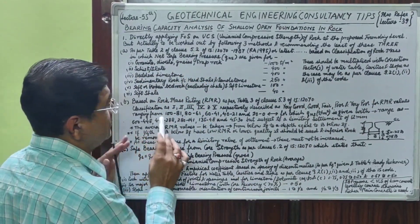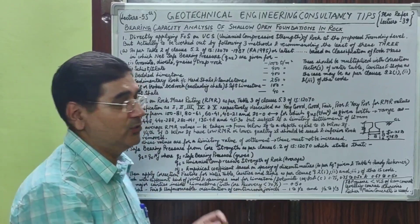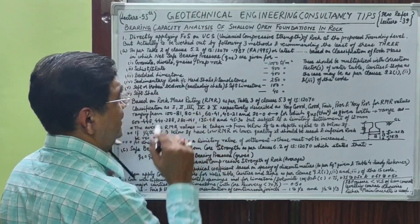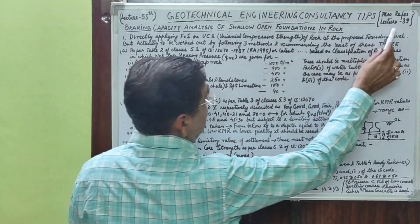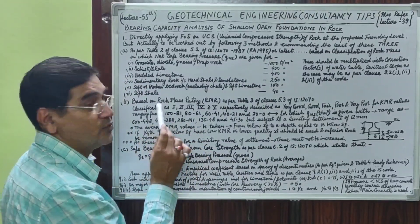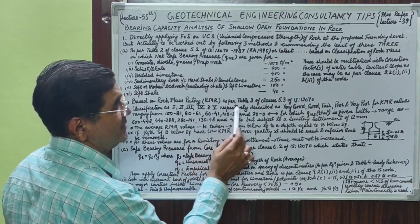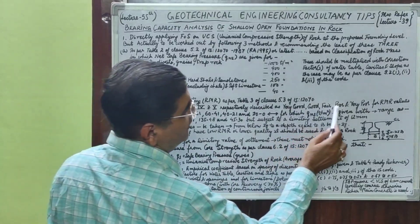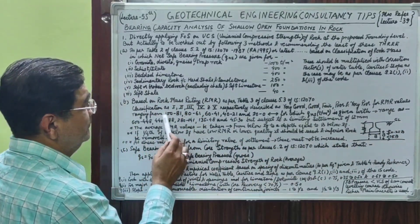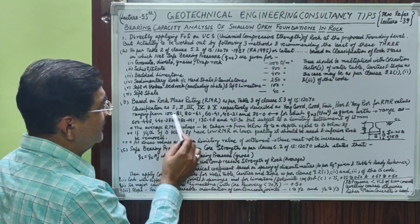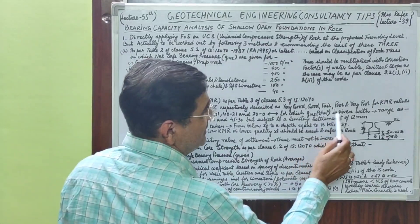The second method is based on Rock Mass Rating (RMR). RMR classification defines five categories: very good, good, fair, poor, and very poor rock, corresponding to RMR values ranging from 100 to 81, 80 to 61, 60 to 41, 40 to 21, and 20 to 0 respectively.